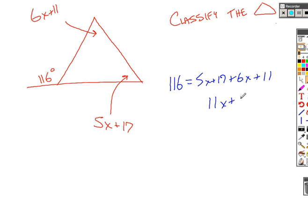You should get 11x plus 18 on the right side, equals 116. I'm sorry, it should be 28, not 16. Get that, you subtract 28 from both sides. That should now become 88 equals 11x. So x equals 8.